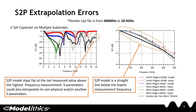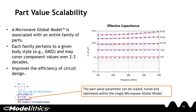A microwave global model is associated with an entire family of parts. Each family pertains to a given body style and may cover component values spanning over two to three decades. Using a single microwave global model improves the efficiency of circuit design, as you can control the part value using a single parameter that can be scaled, tuned, or optimized.